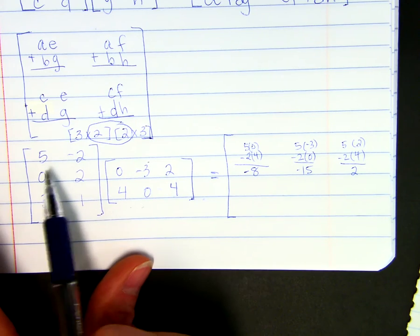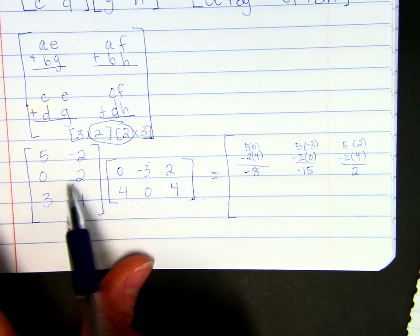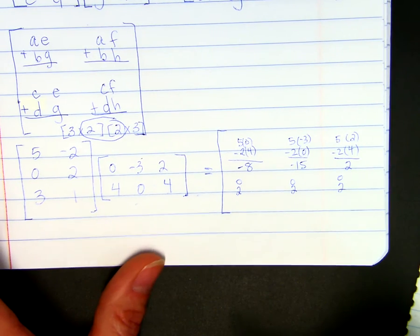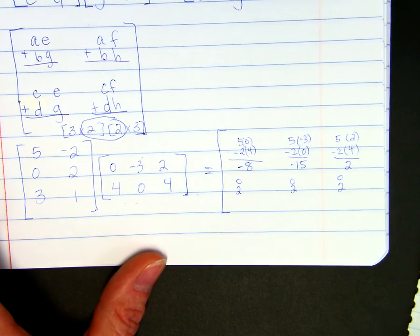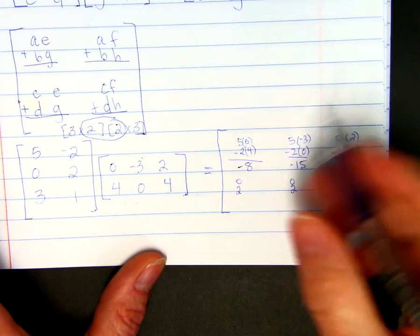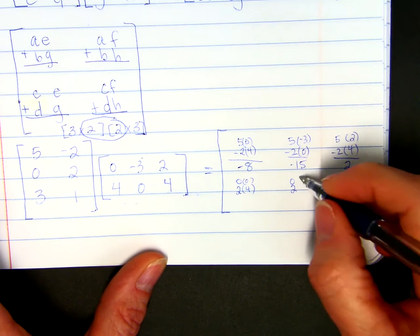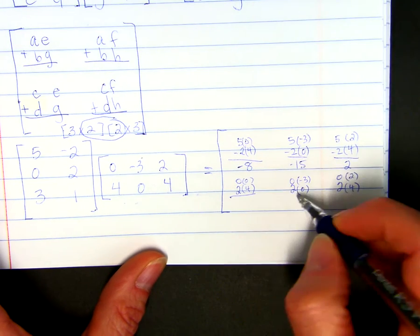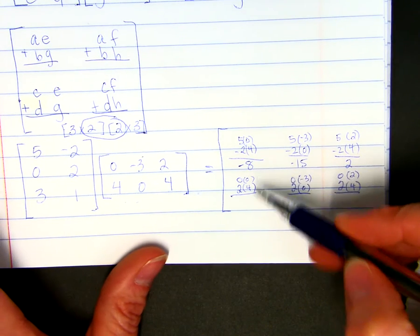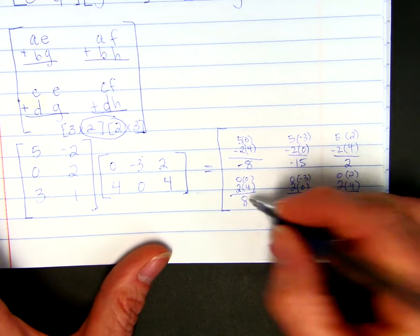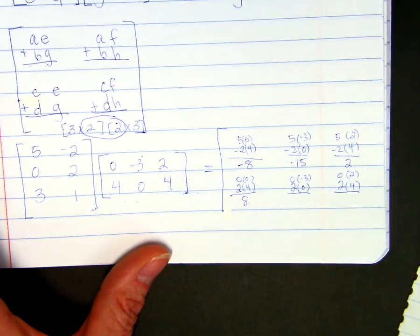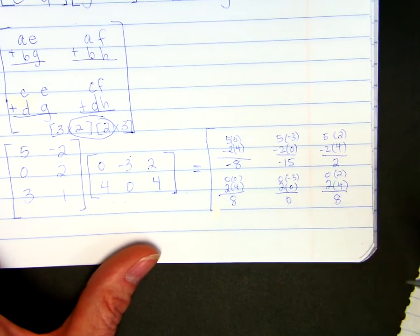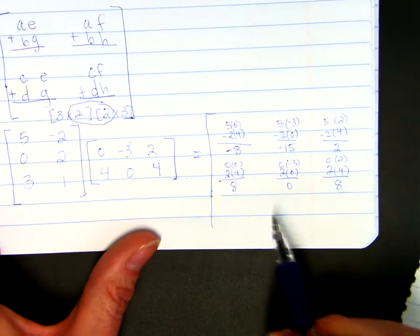To find the second row, we take the second row from the first matrix — 0, 2 — and write it in each of the three columns. Then we multiply by the first, second, and third column of the second matrix: 0, 4 then negative 3, 0, then 2, 4. So 0 times 0 plus 2 times 4 gives 8. Then 0 times negative 3 plus 2 times 0 is 0. And 0 times 2 plus 2 times 4 is 8. That's the second row.